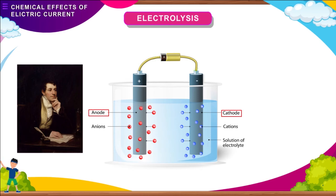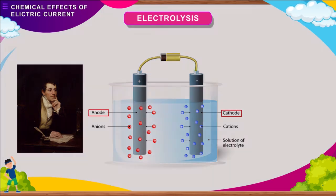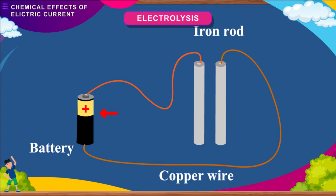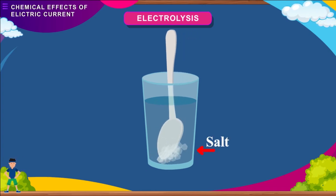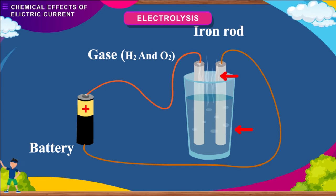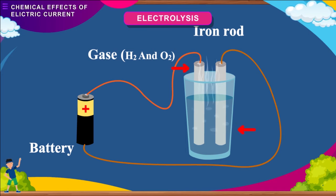Here is an activity to demonstrate the chemical effect of electric current on water. Take two iron nails, wrap one or two rounds of copper wire around them, and connect the other ends of the wires to the two terminals of an electric battery. Take water in a beaker and add a little salt or a few drops of sulfuric acid to make it conducting. Immerse the nails in the solution so they behave as electrodes. Small bubbles of gases will come out from the water near the nails — the gases evolved are hydrogen and oxygen, showing that electric current breaks water into its constituent gases.